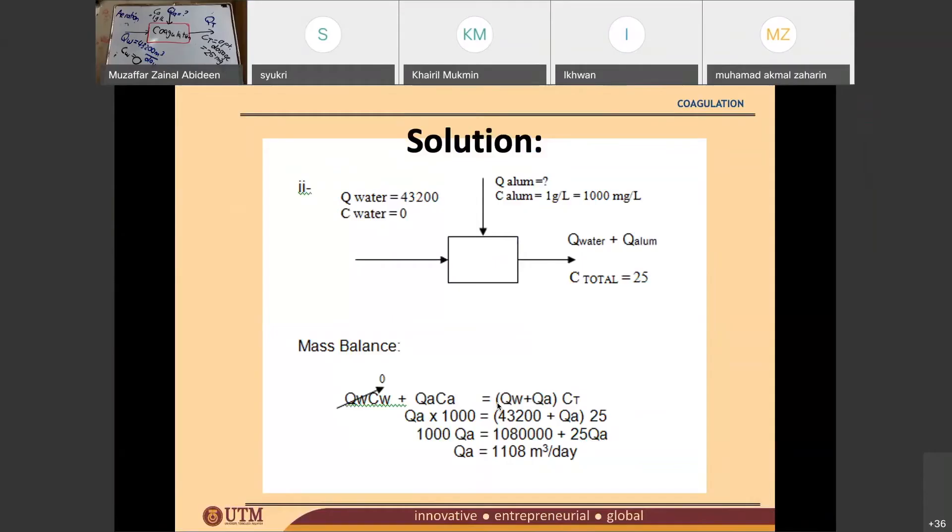So this is basically a mass balance. Q water times C water plus Q alum times C alum is equal to Q water plus Q alum times the optimum dosage of 25. So they would like to find out the Q alum or QA. Just by solving this equation, eventually you will get Q alum to be 1,108 meter cube per day.